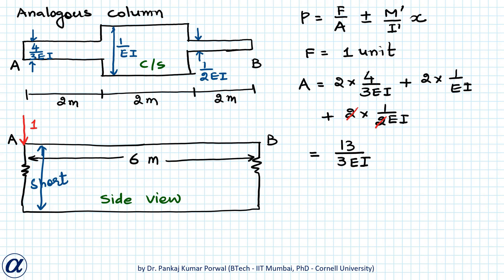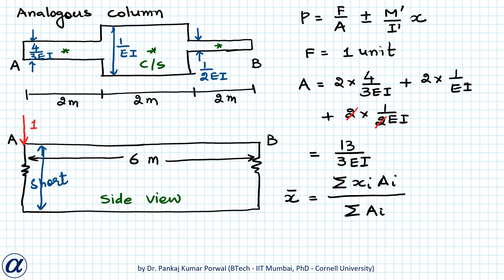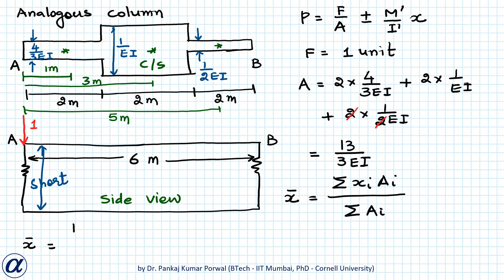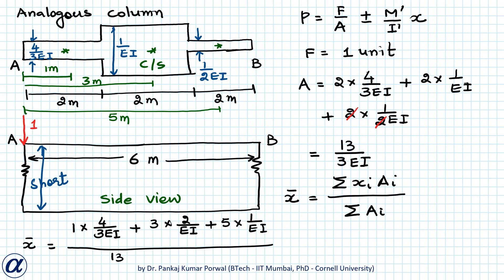Because the breadth of the cross section is not constant, I need to find the location of the centroid. For that, x̄ equals Σ(xᵢ · Aᵢ) divided by Σ(Aᵢ). The centroid of each rectangle is at its midpoint. The distances from edge A are 1 meter, 3 meters, and 5 meters respectively. So x̄ equals [1 × (4/3EI) + 3 × (2/EI) + 5 × (1/EI)] divided by (13/3EI), which equals 37/13 meters.